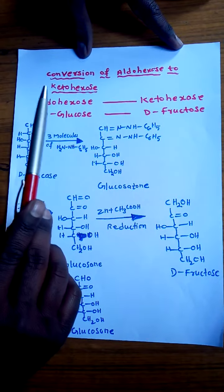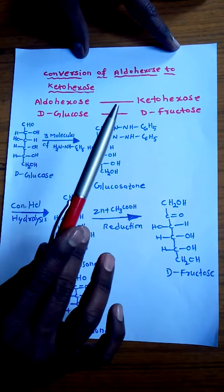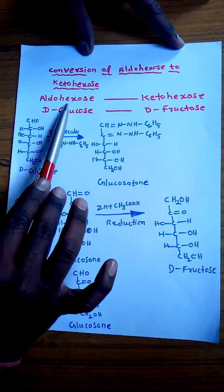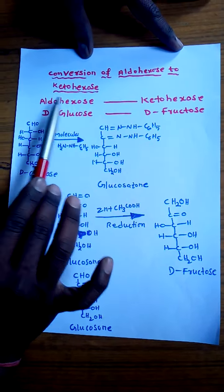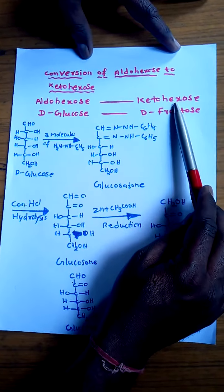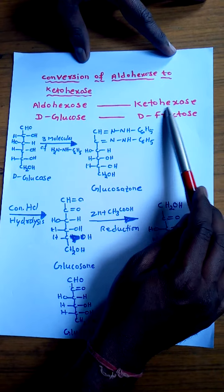In this video we will learn how to convert aldohexose to ketohexose. Aldohexose means a 6-carbon carbohydrate with aldehyde. Ketohexose means a carbohydrate with 6 carbon atoms and with ketone group.